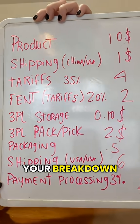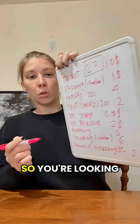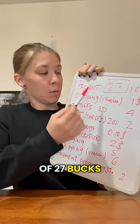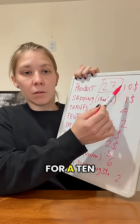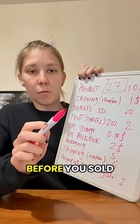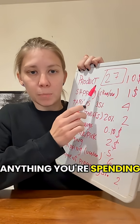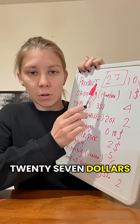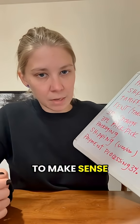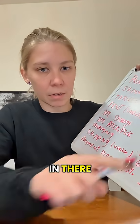So this is your breakdown. You're looking at a total of $27 for a $10 item. Before you've sold anything, you're spending $27. How much do you need to sell your product for it to make sense? And you don't even have any marketing fees in there.